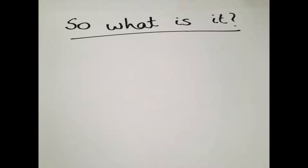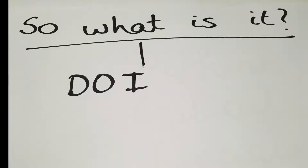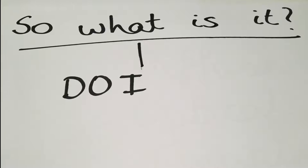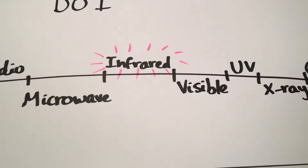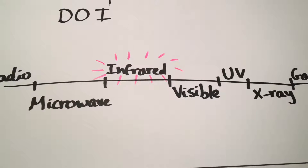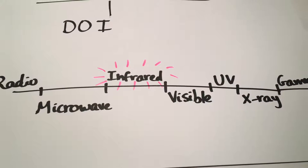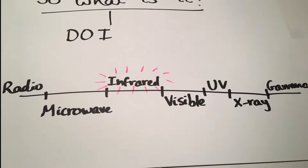So what is it? Well, diffuse optical imaging, also known as DOI for short, uses light in the infrared part of the electromagnetic spectrum in order to produce images of the body.